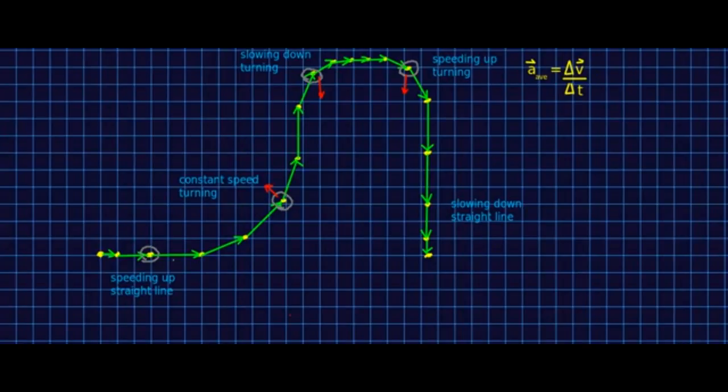So let me quickly do that. Here is our vf. It points forward like so. And I will subtract vi. So it points back like this. And so my delta v is like so, just like we thought.